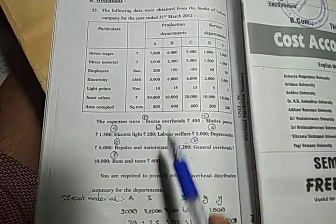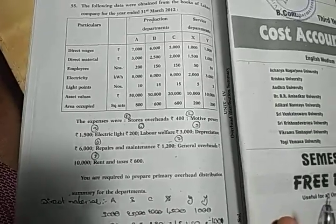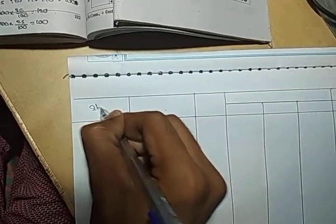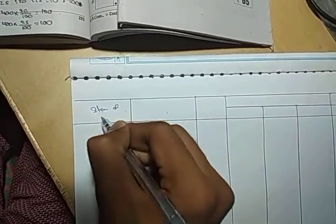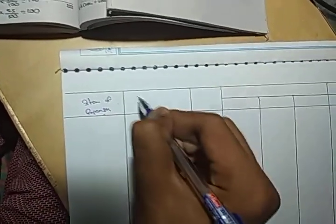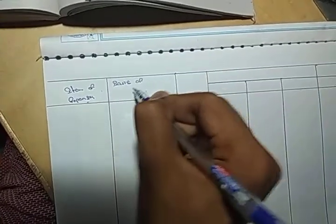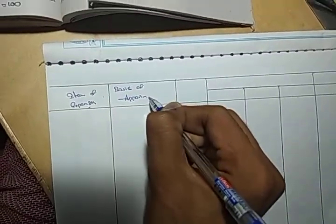Motivation power is the most important problem and it is simple. The format starts with the first item — the item of expenses and the name of the item. Here is the basis of apportionment. This is how it started and this is the total.